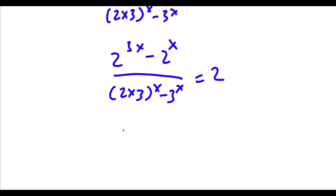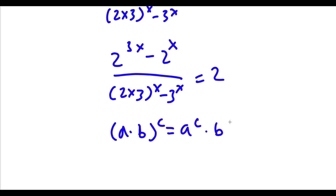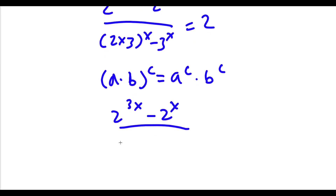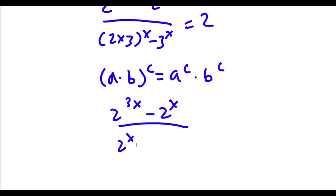Now if I have something in the form a times b to the power of c, this is equal to a to the power of c times b to the power of c. So now I have 2 to the power of 3x minus 2 to the power of x divided by — 2 times 2 to the power of x is going to equal 2 to the power of x times 2 to the power of x — minus 2 to the power of x, is equal to 2.